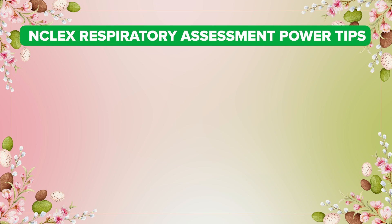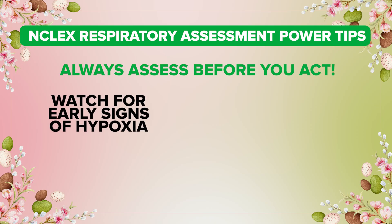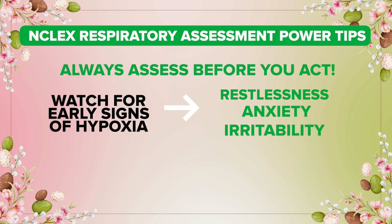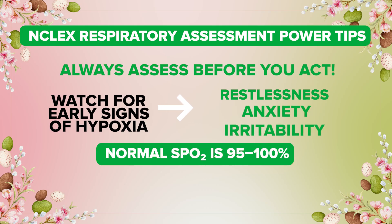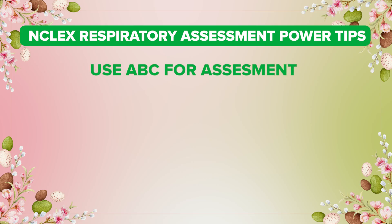For our last section, here are NCLEX respiratory assessment power tips. Always assess before acting or giving medication. Watch for early signs of hypoxia: restlessness, anxiety, and irritability. Remember, normal SpO2 is 95 to 100 percent, but if a patient has COPD, their normal range is 88 to 92 percent — 100 percent is not their normal.